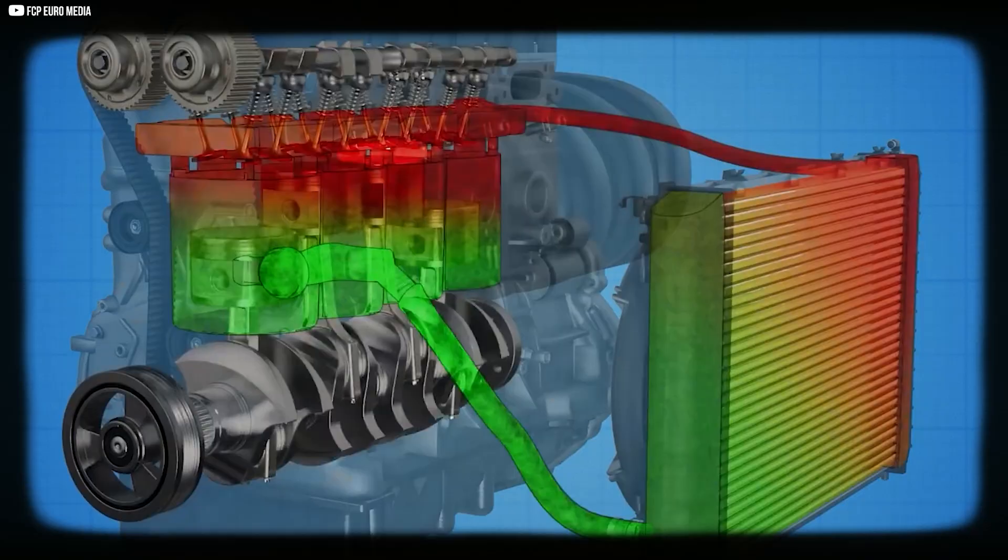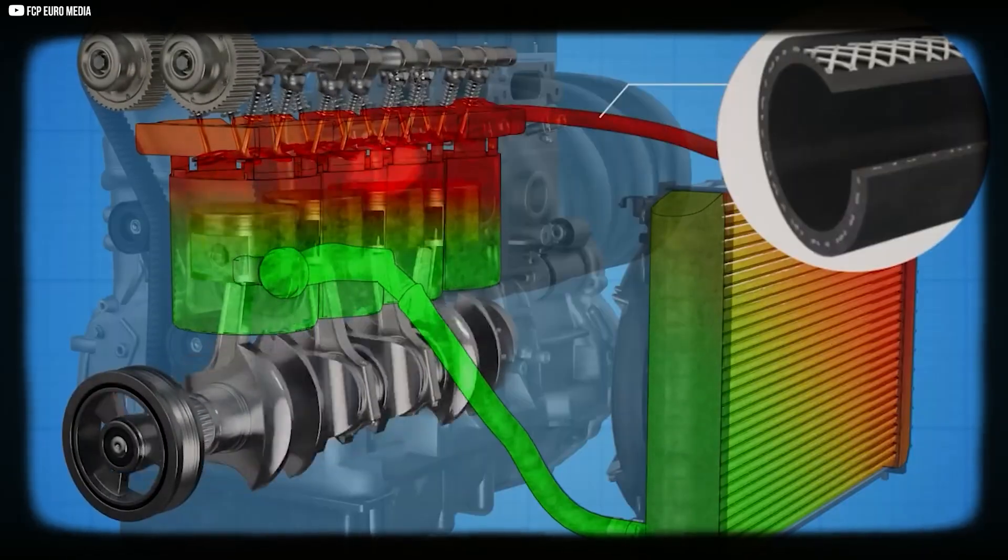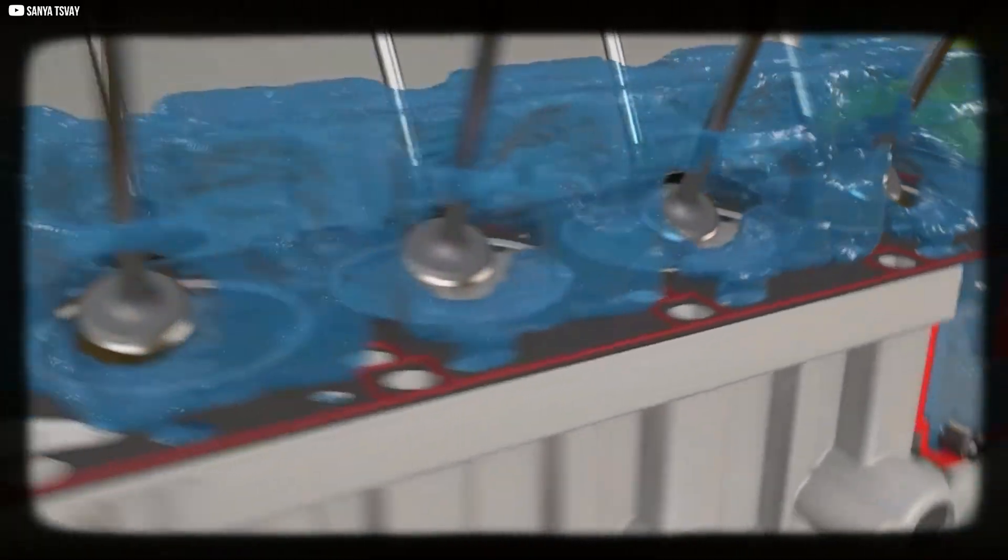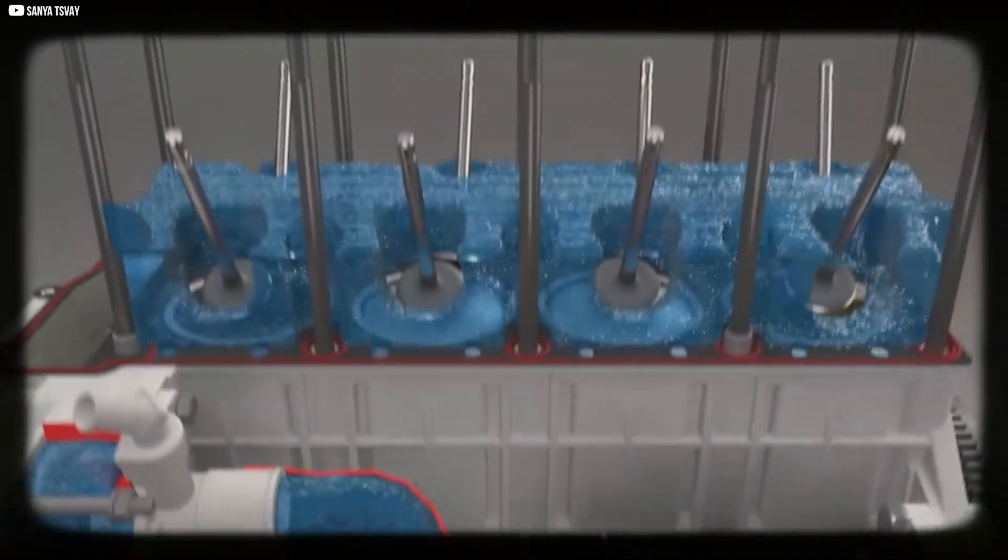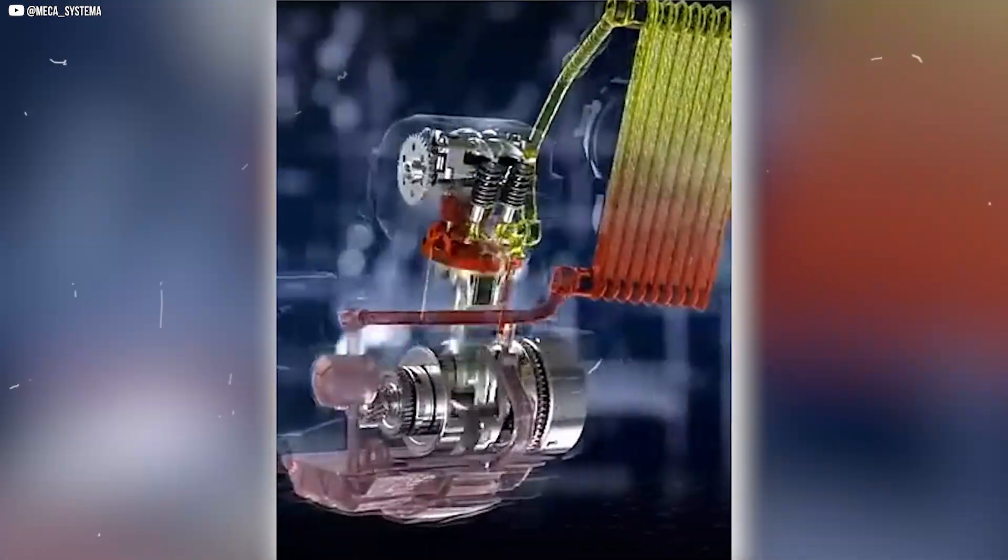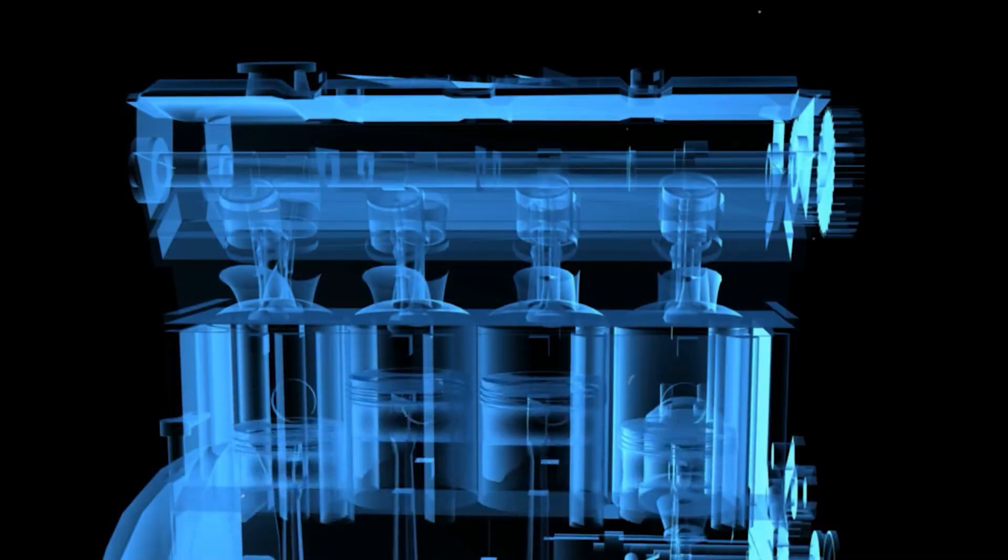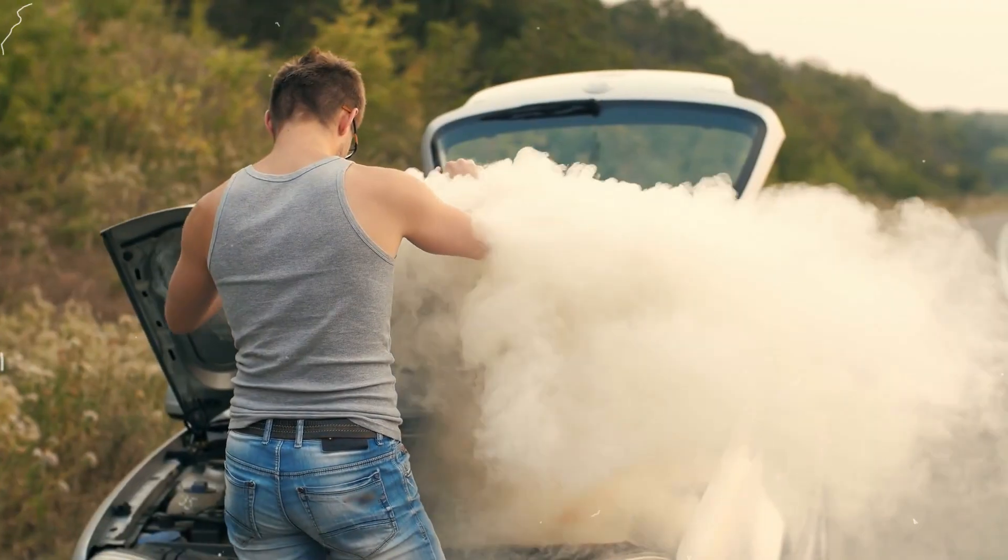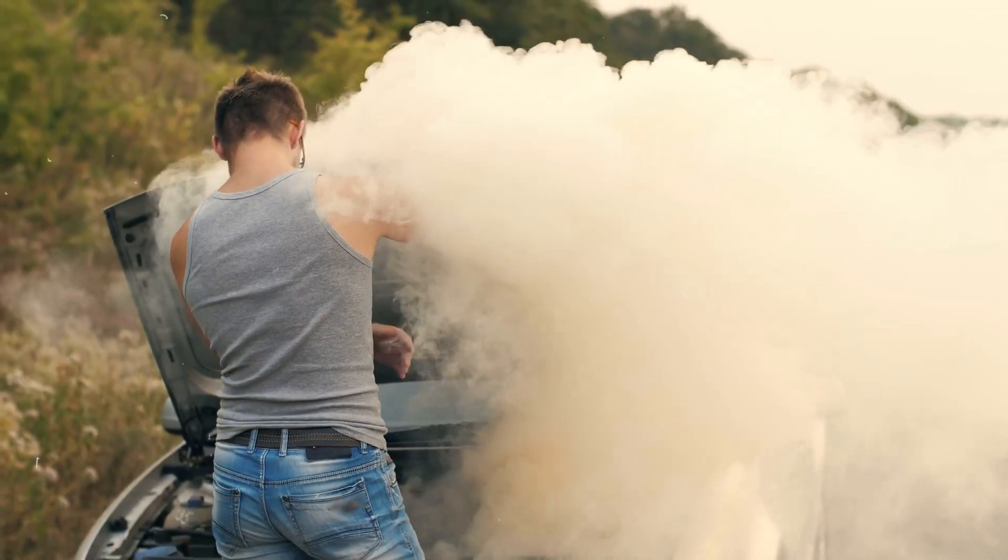After leaving the cylinder jacket, the coolant enters a precise route. It flows through small holes placed in the cylinder head gasket. These holes are carefully sized and aligned to guide the liquid upward into the head. Once inside, the coolant spreads across narrow passages, washing around valves and combustion chambers.